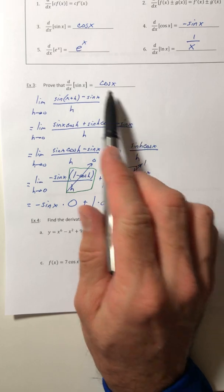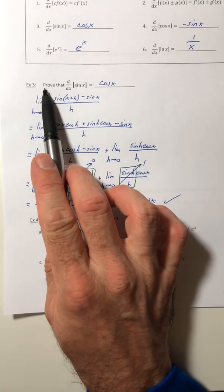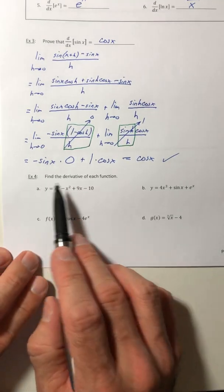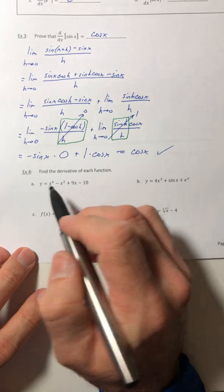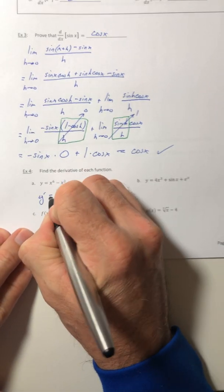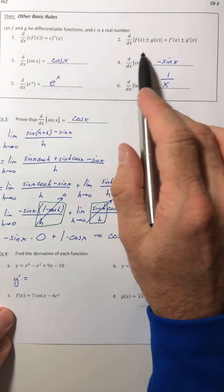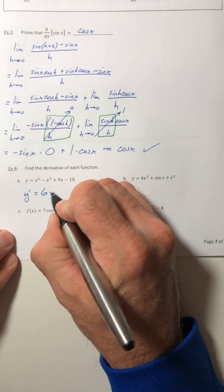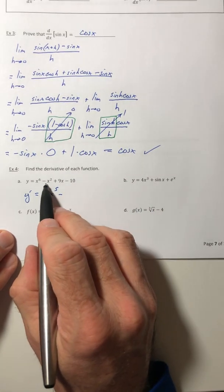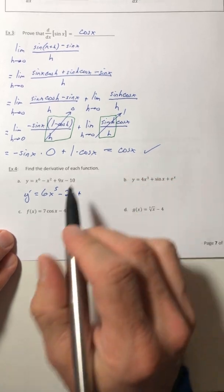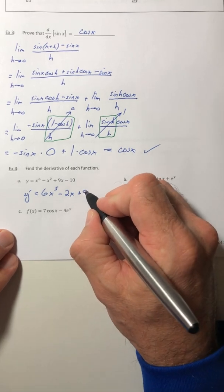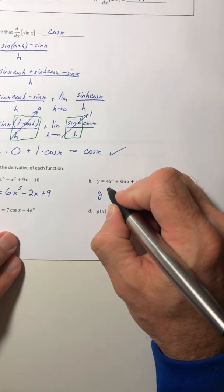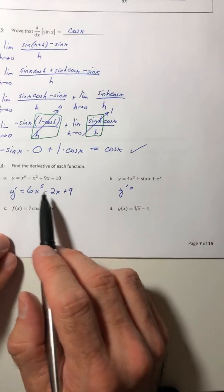All right, so I would expect you to know how to do this, but you only have to do this if it tells you to prove it. Otherwise, if you come across the derivative of sine, you just put cosine. All right, so example four. Find the derivative of each function. So you have multiple terms in here, so that's going to go off of this property here, which says just do the derivative of each term. So the derivative of x to the sixth is 6x to the fifth, minus the derivative of x squared, which would be 2x, plus the derivative of 9x would just be nine, and then the derivative of negative 10, that's your constant, that's just zero. And you're done, which is a whole lot faster than using that limit definition, isn't it?